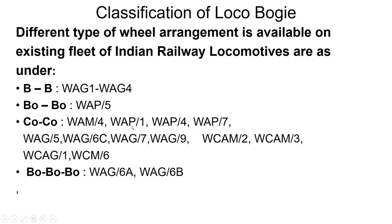Looking at the locomotive engines: in BB type, we have used the WAG-1 and WAG-4. In BoBo type, we use WAP-5. In CoCo type, we use WAM-4, WAP-1, WAP-4, WAP-7, WAG-5, WAG-6C, WAG-7, and WAG-9. Now in BoBo type also, WAG-6A and WAG-6B.